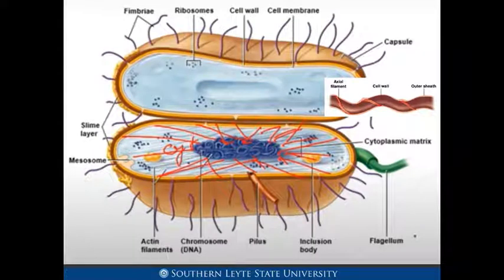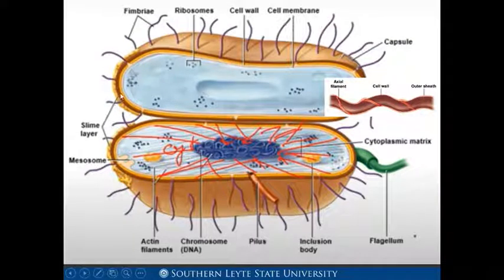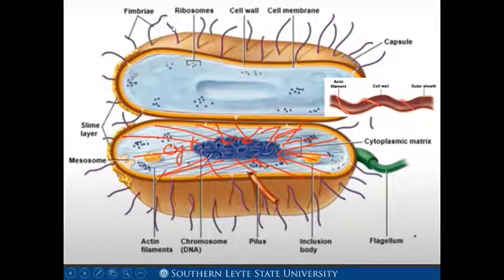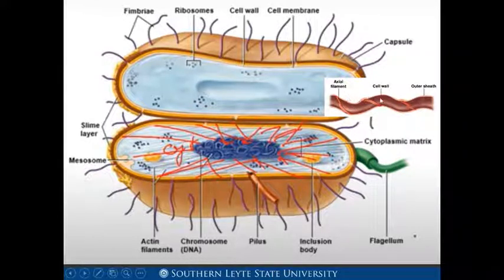Axial filament: spiral cells that move by means of axial filaments are called spirochetes. Axial filaments are similar to flagella except that they wrap around the cell. Fimbriae help cells adhere to surfaces, while pili are involved in twitching motility and DNA transfer. Here in the diagram of the cell structure, we can see the slime layer, the capsule, the fimbriae, the flagellum, and the axial filament located in the cell wall.